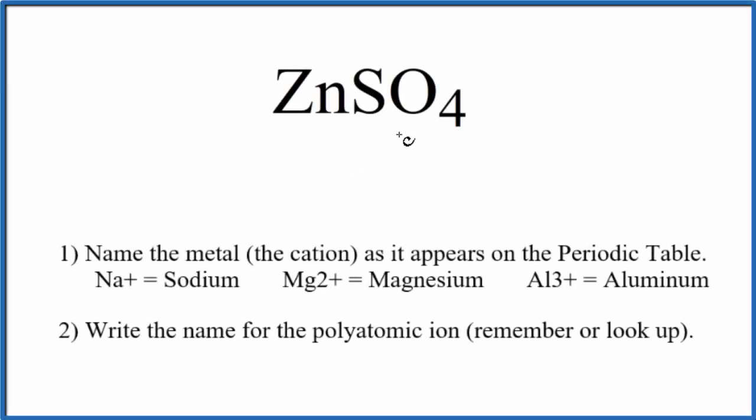To write the name for ZnSO4, the first thing we need to recognize is this SO4 here. This is a polyatomic ion. It's called the sulfate ion. Good one to remember.